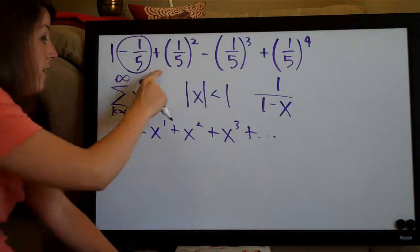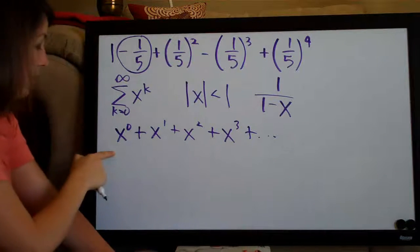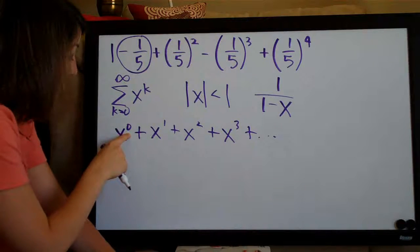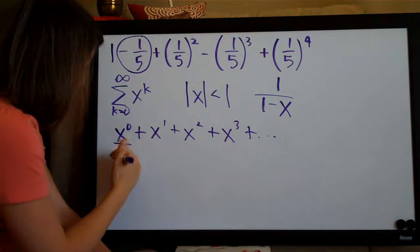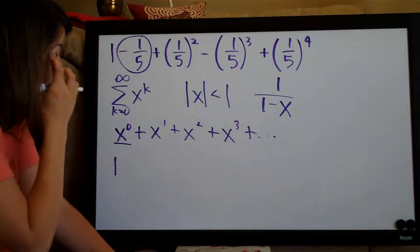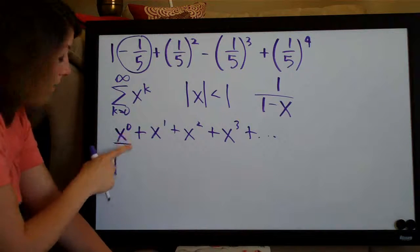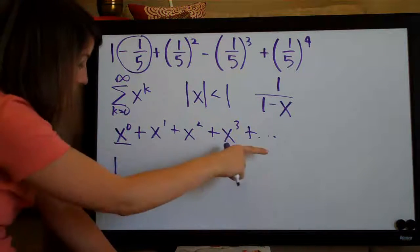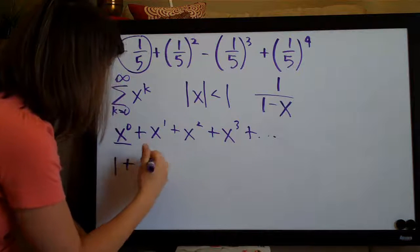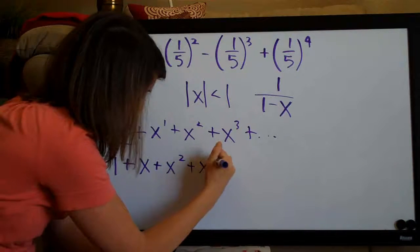If our series takes this form, we should be able to write it exactly like this. Anything raised to the 0 power is 1, so the first term is 1 — that's why we're lucky, because our series also starts with 1. Then x^1 simplifies to x, so we have 1 plus x plus x squared plus x cubed and so on. So the second term of the expanded series is simply x.